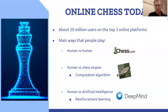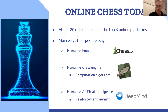So the online chess world today, just a quick overview: there are about 20 million active users. The main ways that people play are human versus human, human versus chess engine if you want to play against a computational algorithm, or in the past few years there have been artificial intelligence chess bots based on reinforcement learning — and you will be absolutely no competition whatsoever for those models.